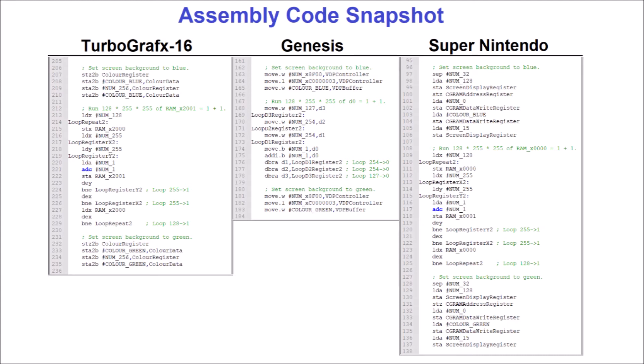This is because both of their CPUs are based on the architecture of the 6502 CPU, which was used on the 8-bit Nintendo Entertainment System. The Genesis has a slightly different and, in my opinion, more modern syntax format compared to its peers. If you're interested in reading over the code, please have a look at my GitHub link provided below.